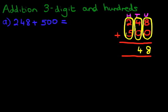What is 2 plus 5? 2 plus 5, well we know that, that's nice and easy, it's 7. And we have our answer. 248 plus 500 is 748, and we've done that using the vertical format. That is correct.